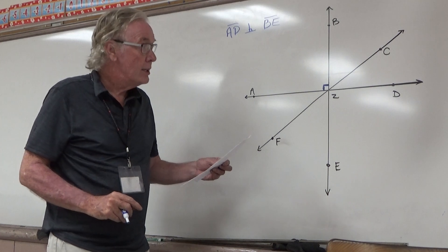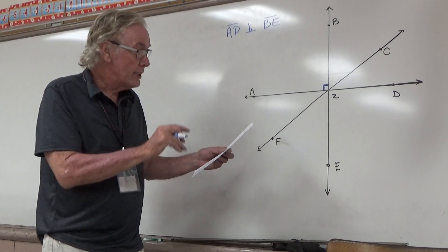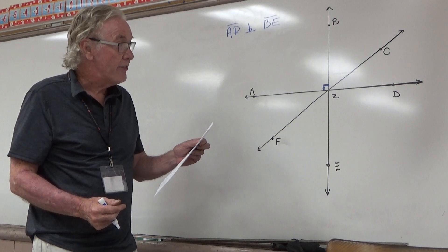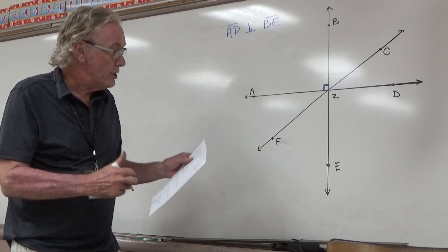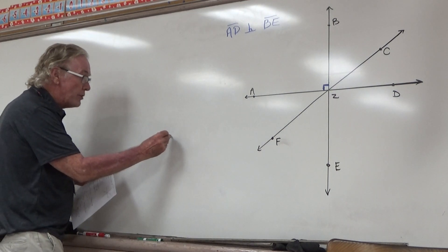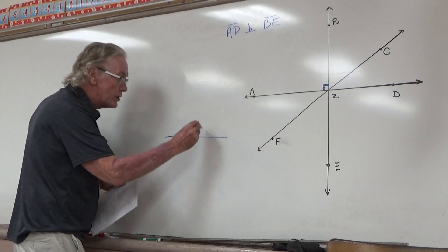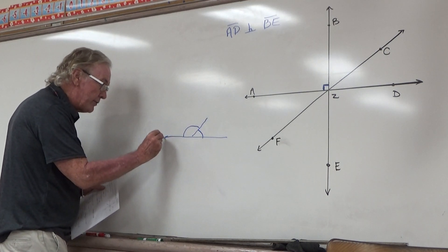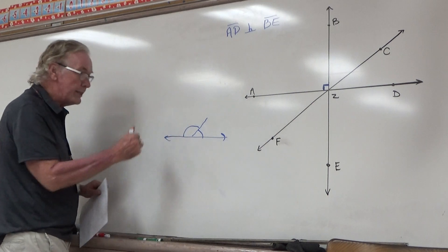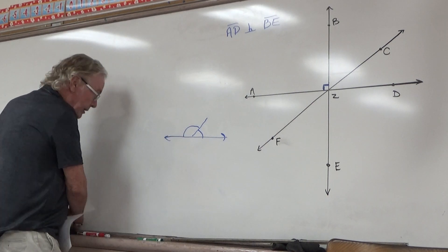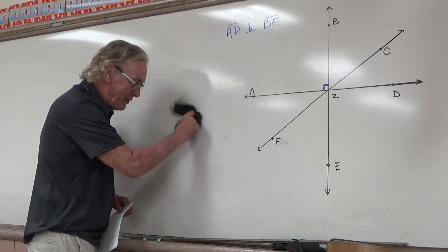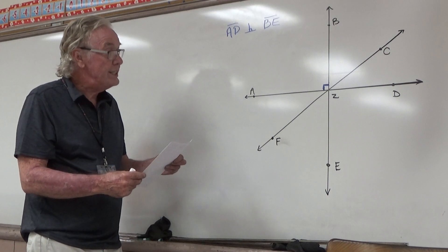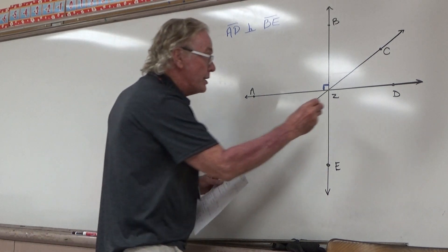The first thing it asks me about is a linear pair. There are lots of linear pairs on there, but we're looking for a linear pair with angle DZF. Let me tell you about linear pairs first. Linear pairs are formed when two angles go together to make a straight line — that little angle and that little angle make this straight line together. That's a linear pair.